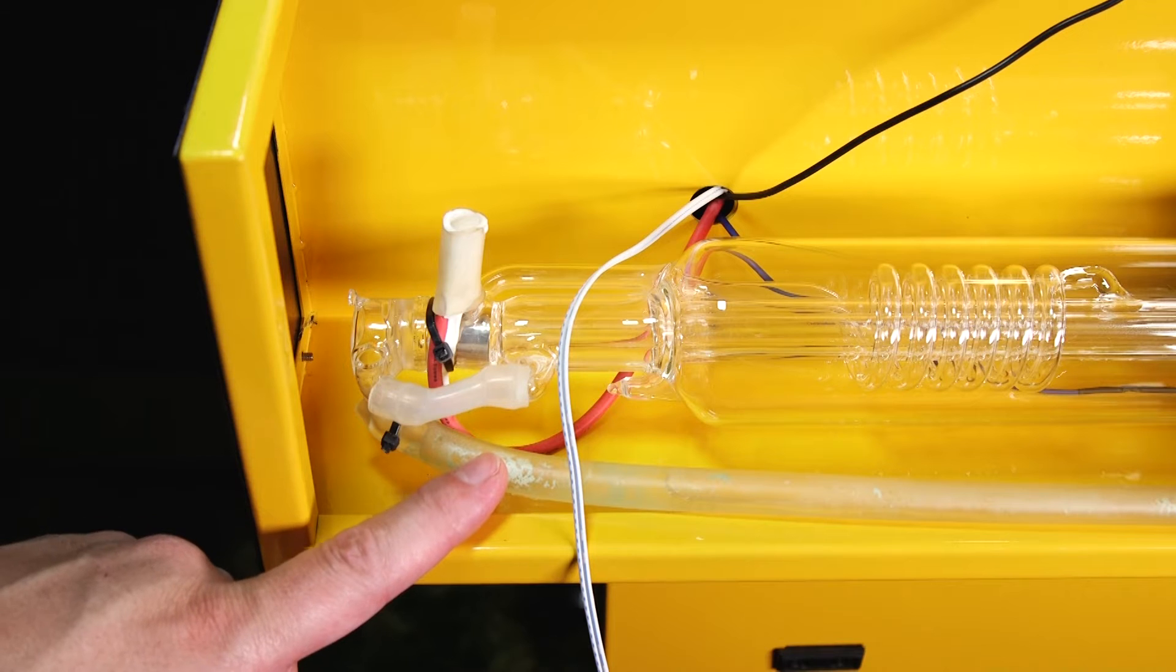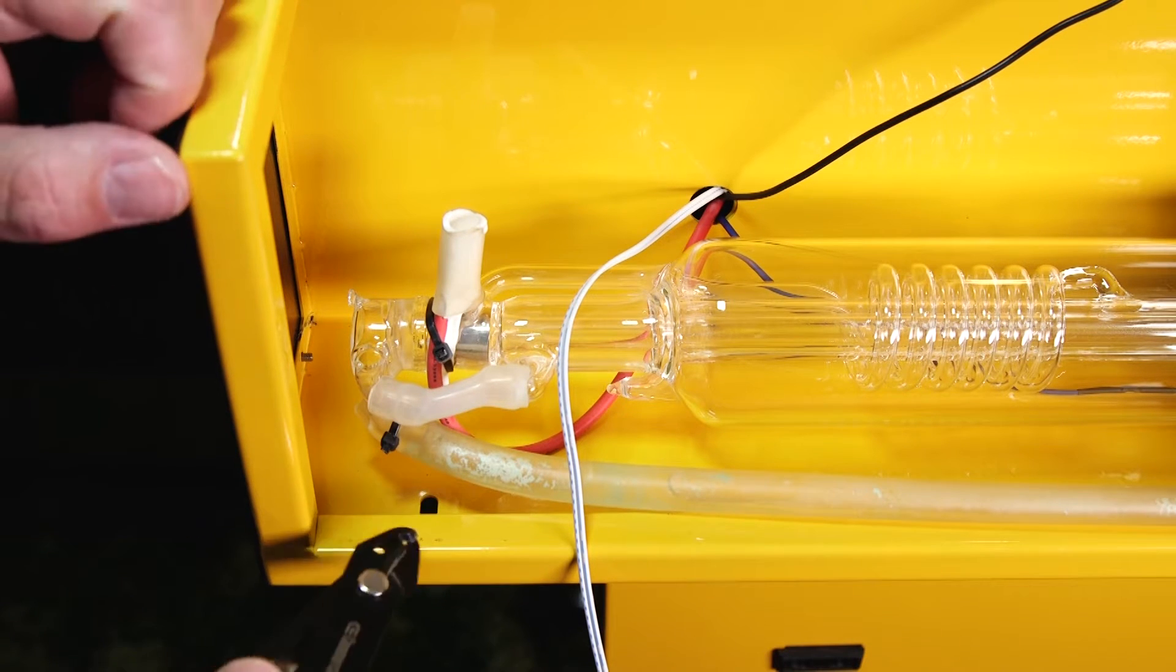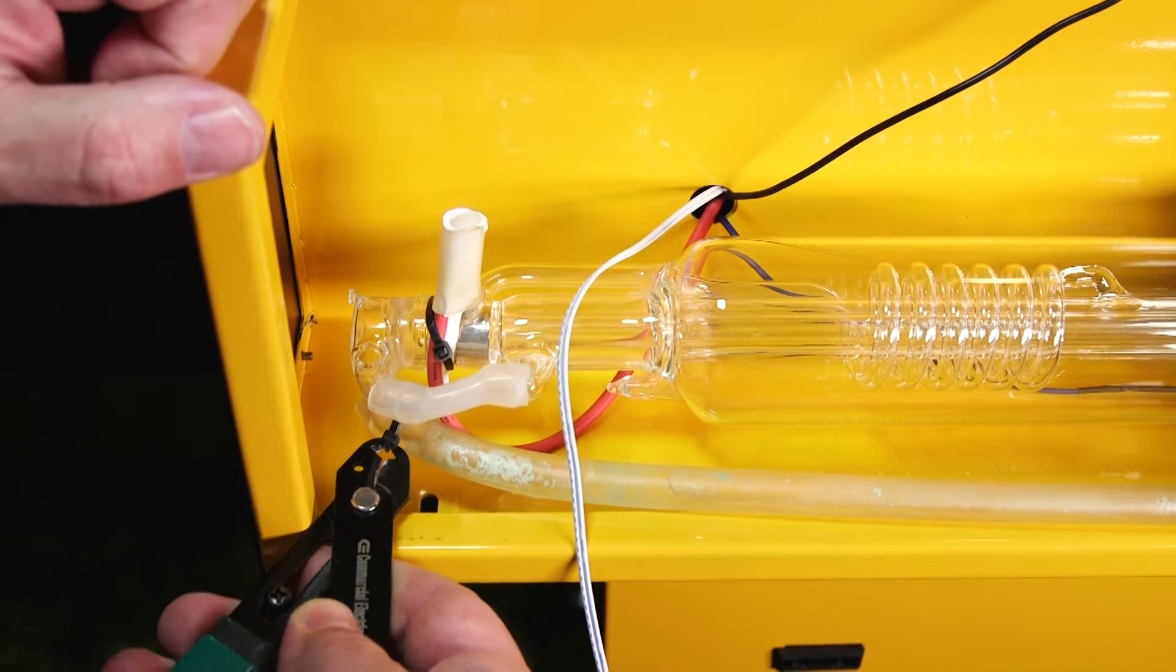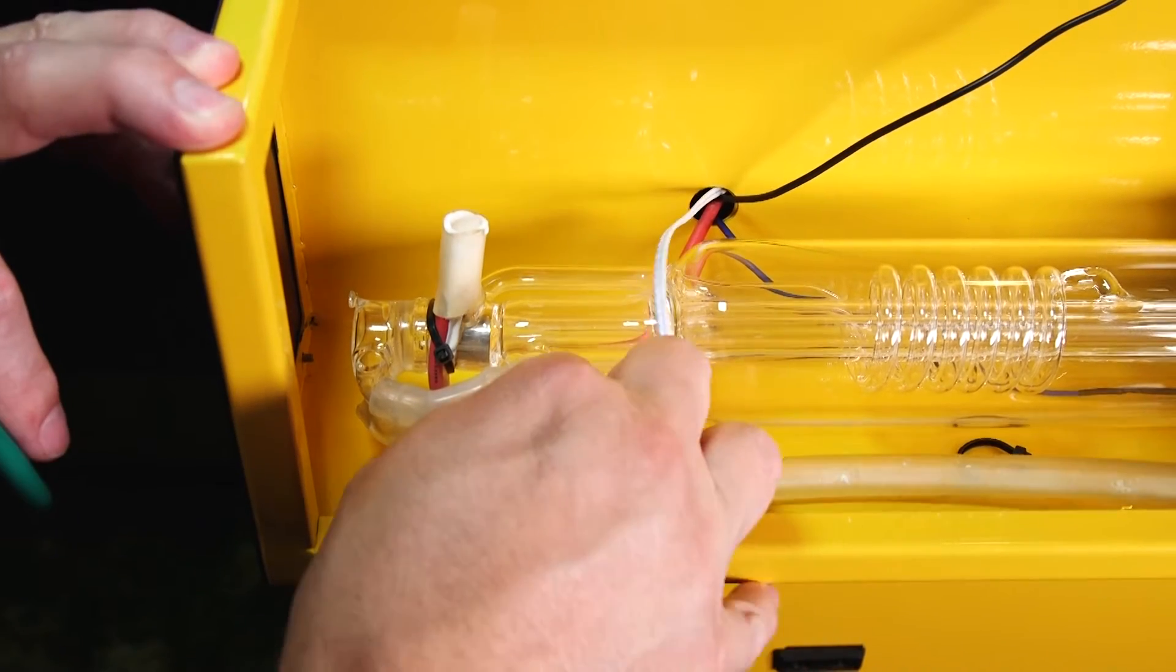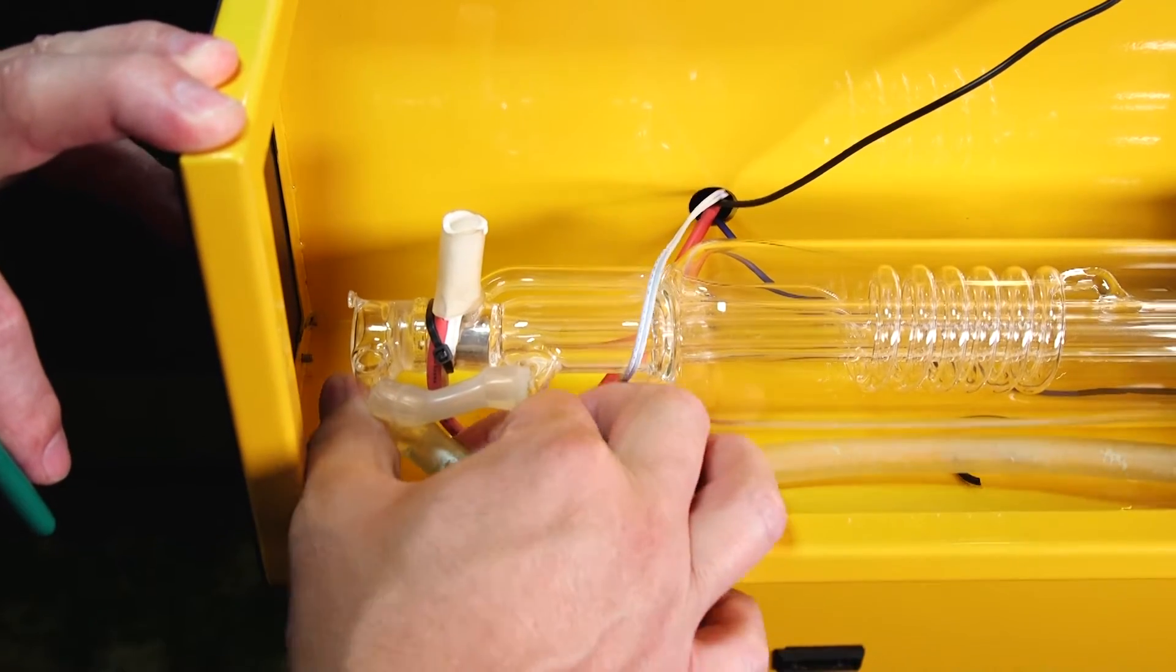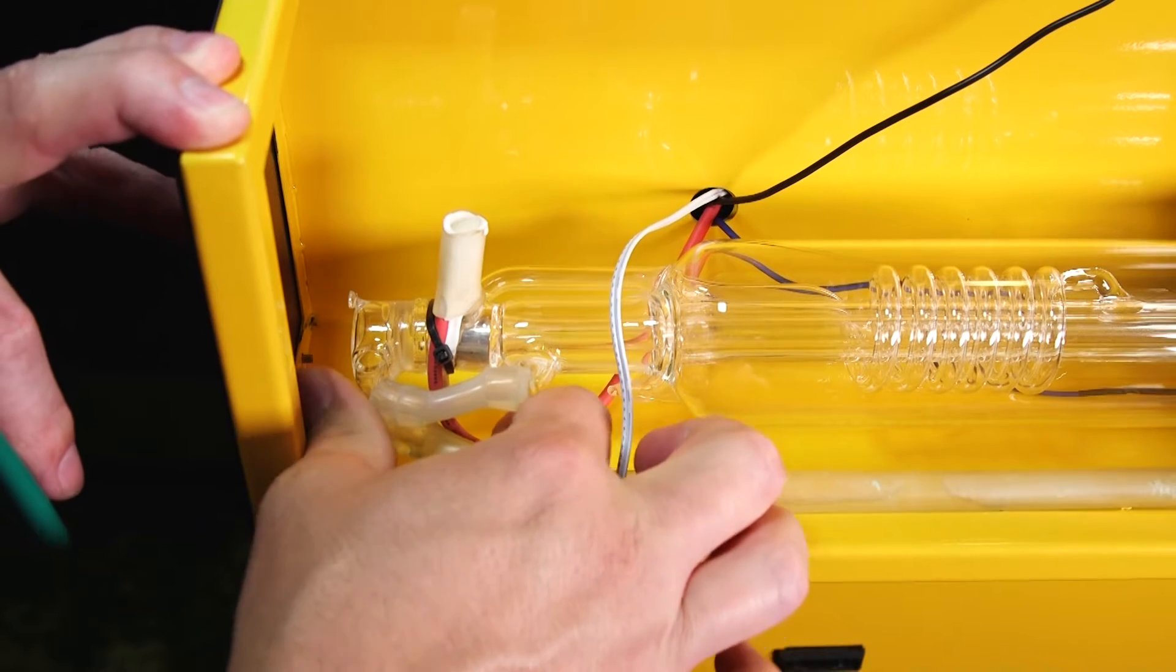Now I'm going to remove the hosing from the left side of my CO2 laser tube. I'm going to do this by clipping the little zip strap that's holding it on. I'm then going to try to twist the tubing off. Now my tubing seems to be adhered to the glass pretty good so we're going to go ahead and cut it to get it free.